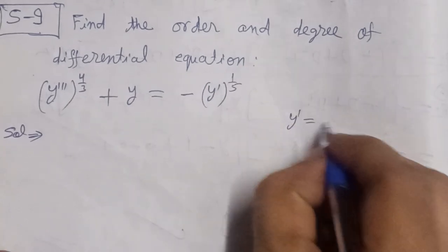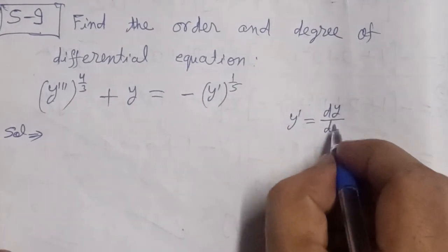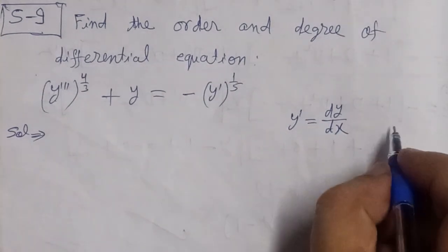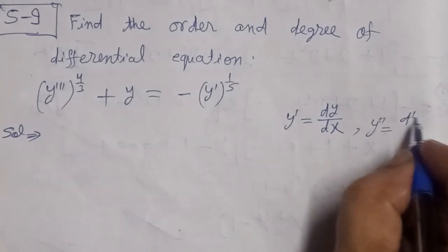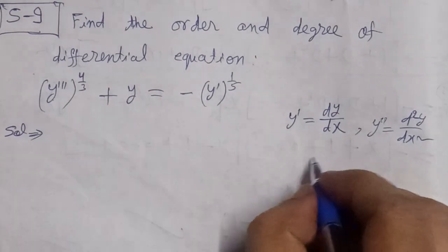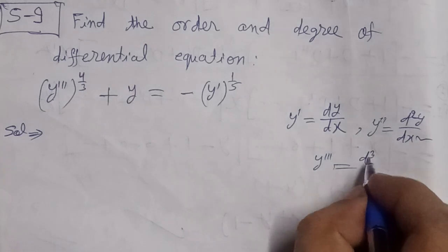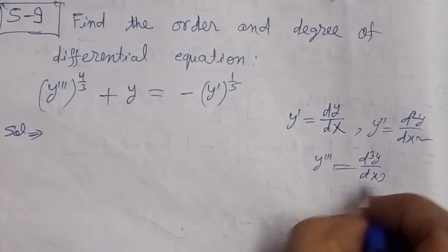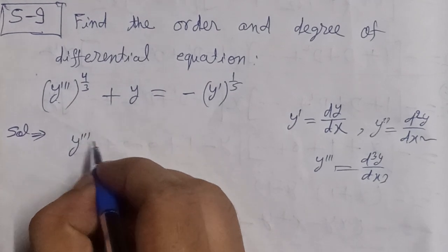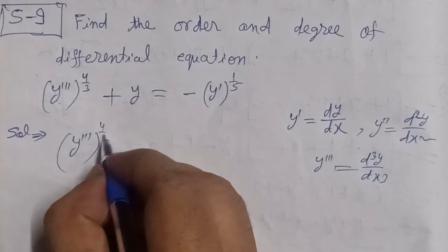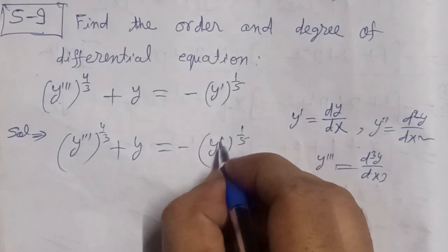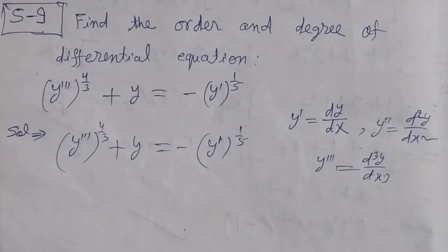y dash means the differentiation of y with respect to x — the differential coefficient. y double dash means y is differentiated twice with respect to x. y triple dash means y is differentiated three times with respect to x. Now, the given differential equation is y triple dash whole power 4/3 plus y is equal to minus y dash whole power 1 by 5.